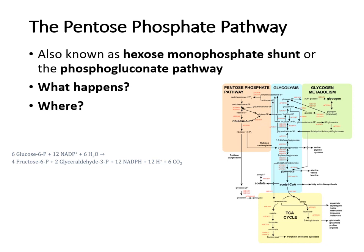With carbohydrate metabolism, one of the pathways I want to go over today is the pentose phosphate pathway. It's also known as the hexose monophosphate shunt or the phosphogluconate pathway. There are two aspects of this pathway to know. First, it's going to reduce NADP+ to NADPH, which is a very valuable source in terms of redox reactions.